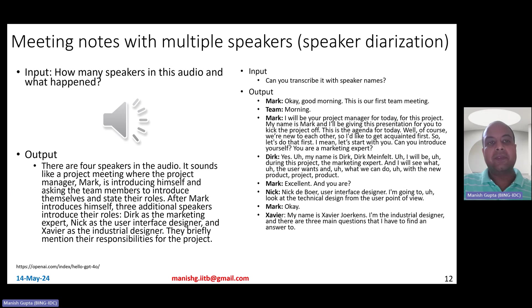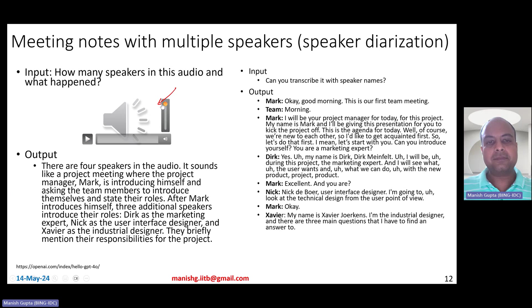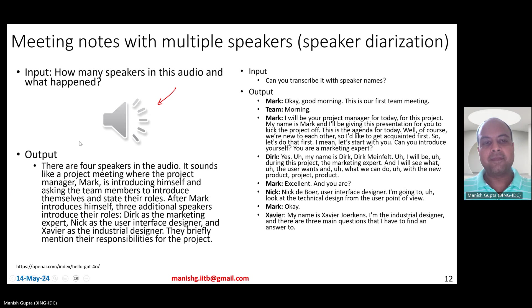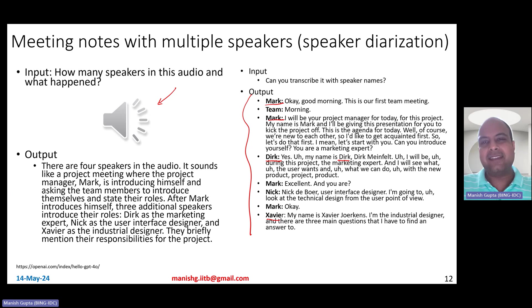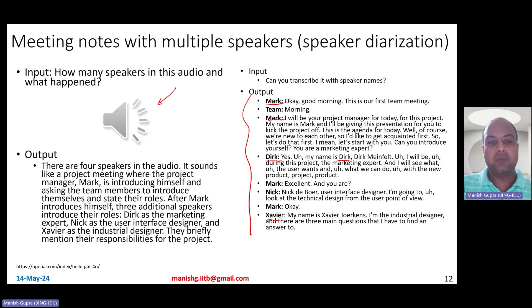It also supports audio. You can give it some sort of a transcript from a meeting, and it not only outputs the transcript but also identifies who the person is who's speaking — whether it's Mark, Dirk, Nick, Javier, and so on — derived from people introducing themselves in the meeting. This is a simpler case of speaker diarization, but it does really well. It can nicely do audio-to-text, identify speakers, and also summarize what's going on in the audio.